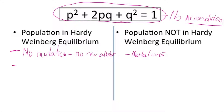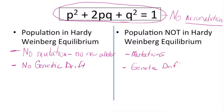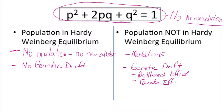Another condition for a population to stay in Hardy-Weinberg equilibrium is there can be no genetic drift. If there is genetic drift, that is going to shift a population out of Hardy-Weinberg equilibrium. There are two types of genetic drift specifically: one is called the bottleneck effect and the other is called the founder effect.